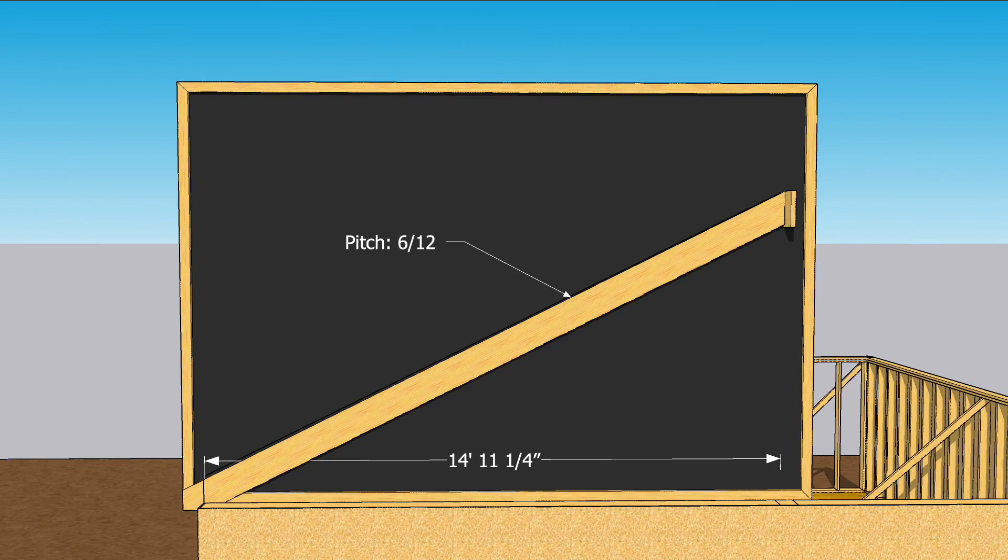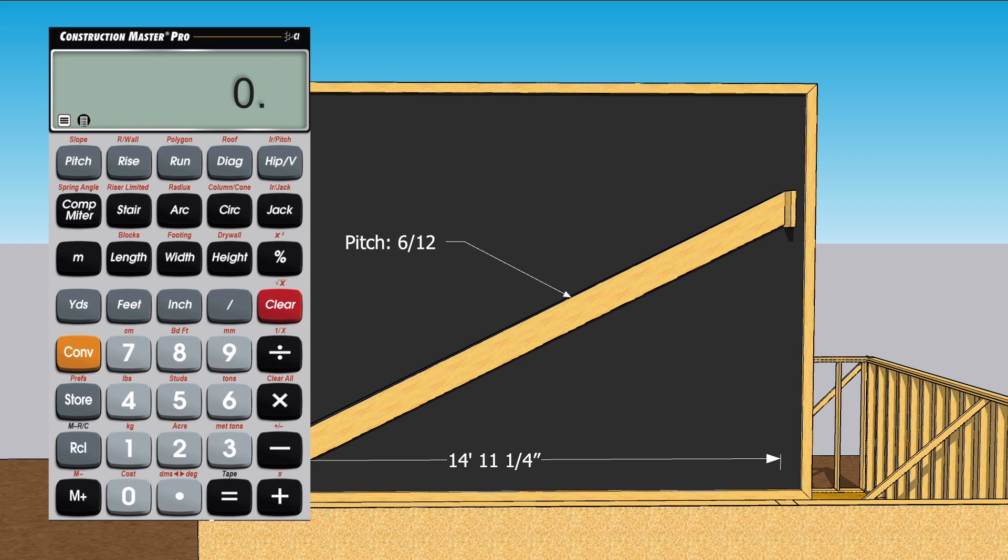Because we know the run of the rafter and the pitch of the roof, we can use a calculator to figure out the height of the ridge. Punch in 14 feet, 11 inches, 1 quarter, run.